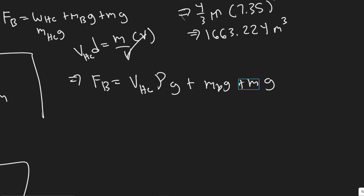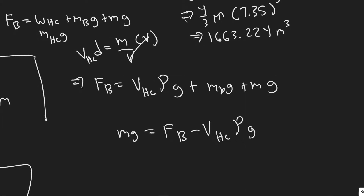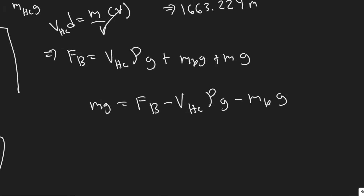Solving for the mass of our cargo, we move terms to the other side: m_cargo times g equals FB minus the volume of helium times rho_HE times g, minus m_B times g.